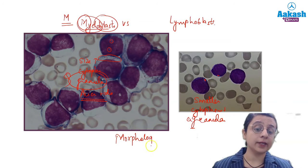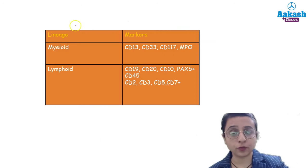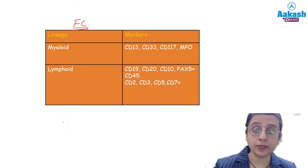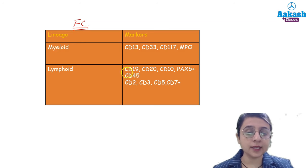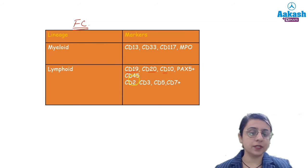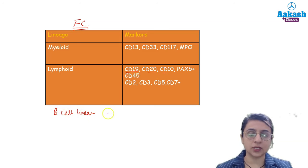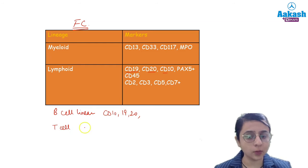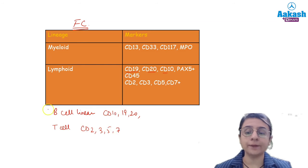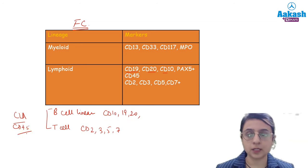It is also important to identify blasts on flow cytometry markers. Myeloid lineage can be identified with CD13, CD33, CD117, and MPO. For lymphoid lineage: B-cell markers are two-digit numbers — CD10, CD19, CD20, PAX5. T-cell markers are single digits — CD2, CD3, CD5, CD7. Common leukocyte antigen is CD45. This helps you identify myeloid and lymphoid lineage easily.